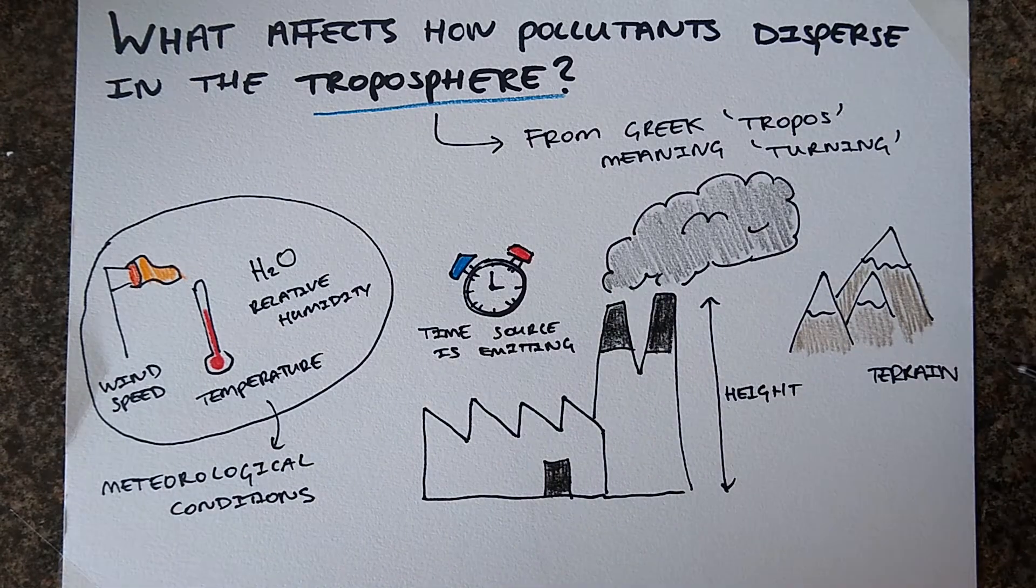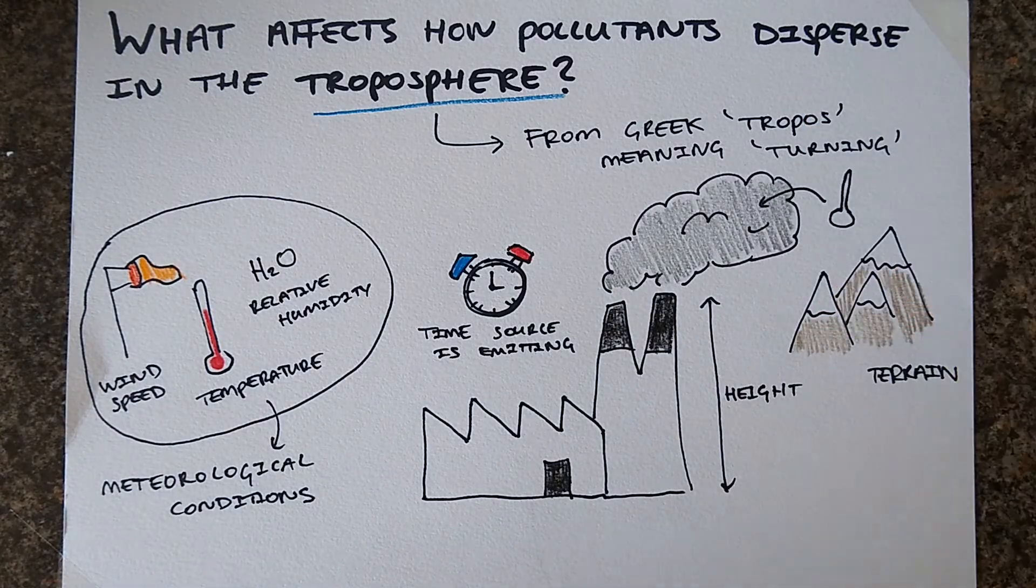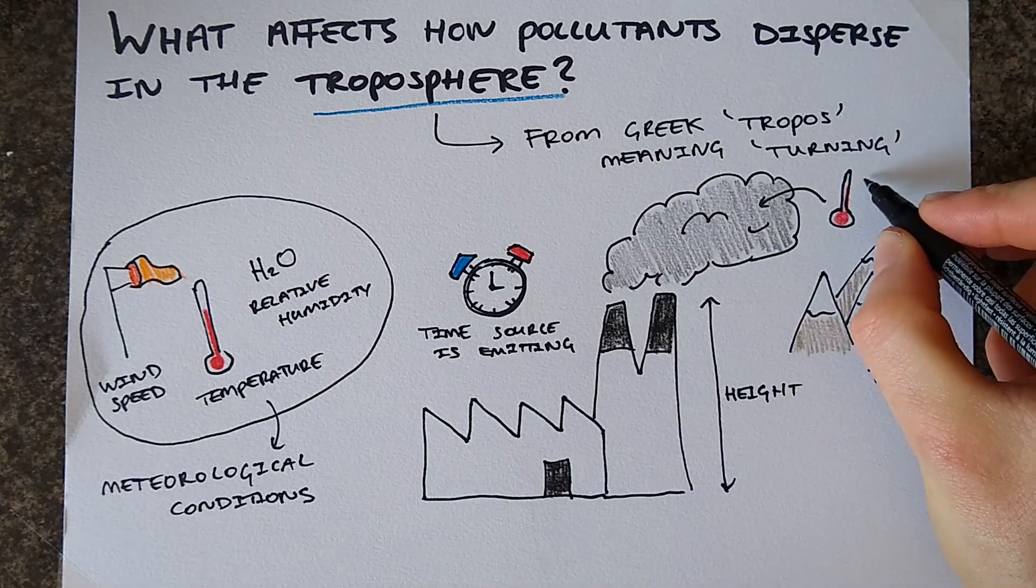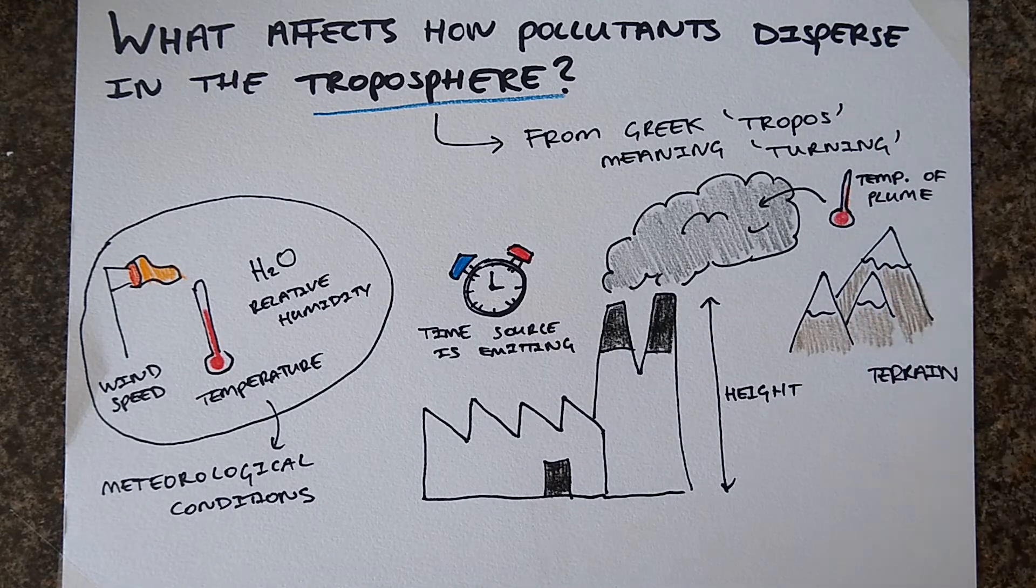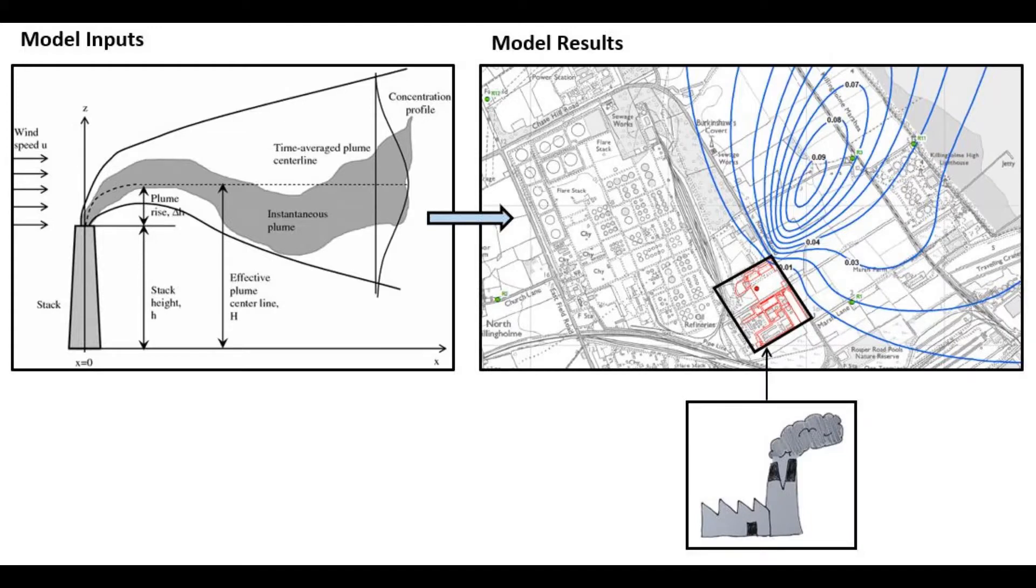Finally, the exhaust temperature of the emissions plume influences how the pollutants disperse. Generally, hotter plume temperatures mean pollutants rising higher and often dispersing faster. A large part of what we do at ACOM is to use computer models that consider these variables to predict where pollutants from various emissions processes end up. This is called atmospheric dispersion modeling.